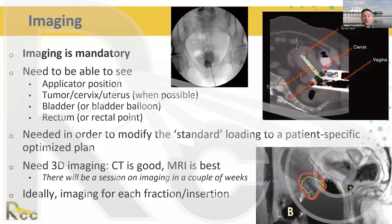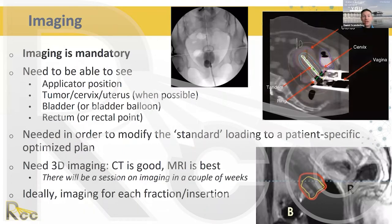Scanning parameters should be optimized as part of the commissioning process at the beginning of a new brachytherapy program and should be part of the radiation therapist's standard operating procedure. If the patient is going to be imaged outside the radiation oncology department, they should be accompanied by someone from the department who can ensure proper scanning parameters are used. The worst outcome would be returning with an image that can't be used because image quality is poor or the scan didn't extend far enough to capture all the applicator or target organs at risk.